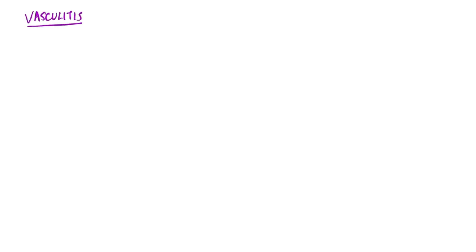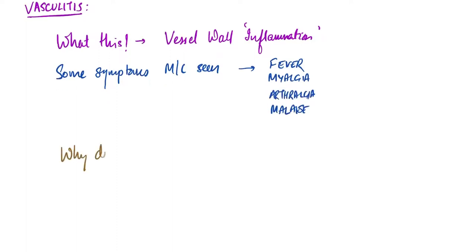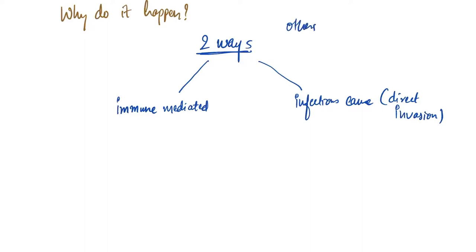In this video, I am going to talk about vasculitis. Vasculitis means inflammation of the vessel wall. Common symptoms across all patients include fever, myalgia, arthralgia, or malaise. There are two main mechanisms: it can be immune-mediated, infectious, or physical or chemical injury to the vessel wall.